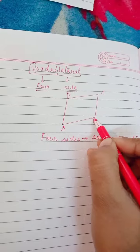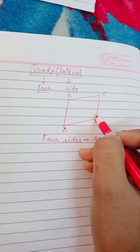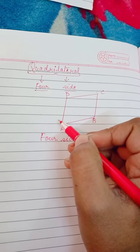a quadrilateral also has four vertices. What is a vertex? Vertices is a...